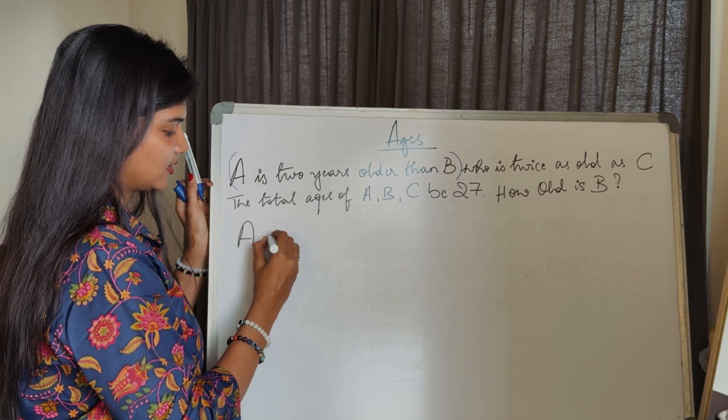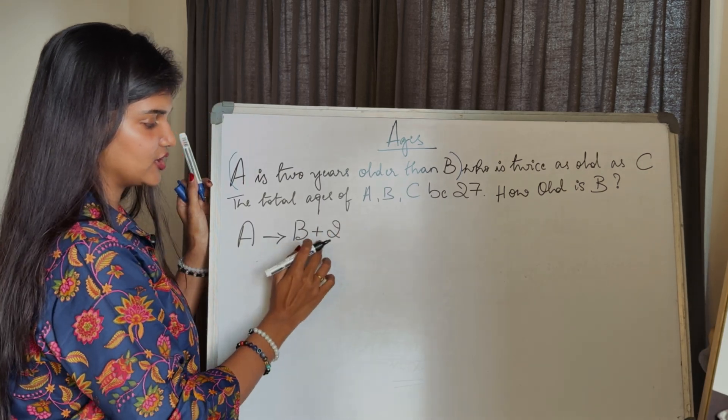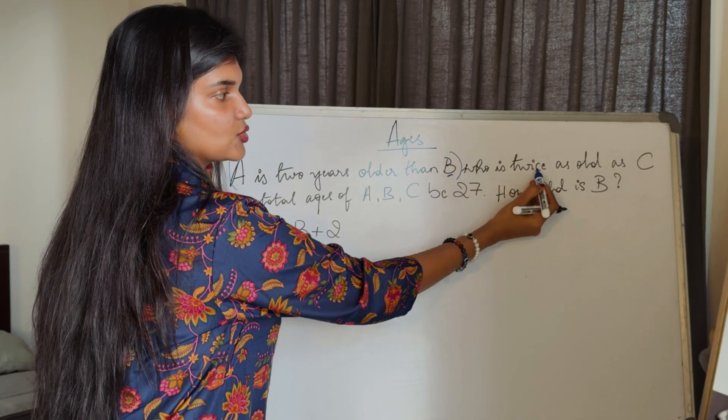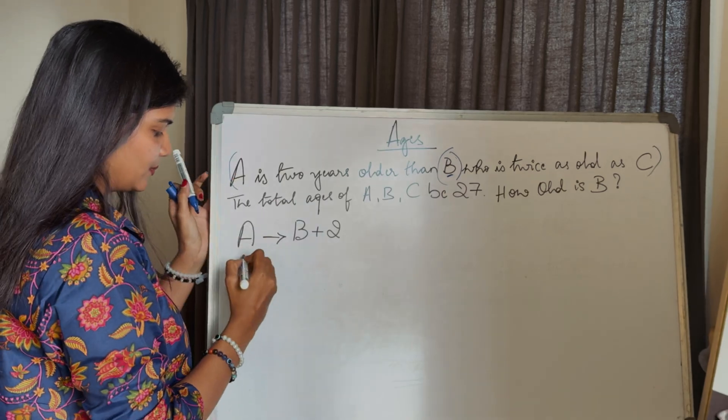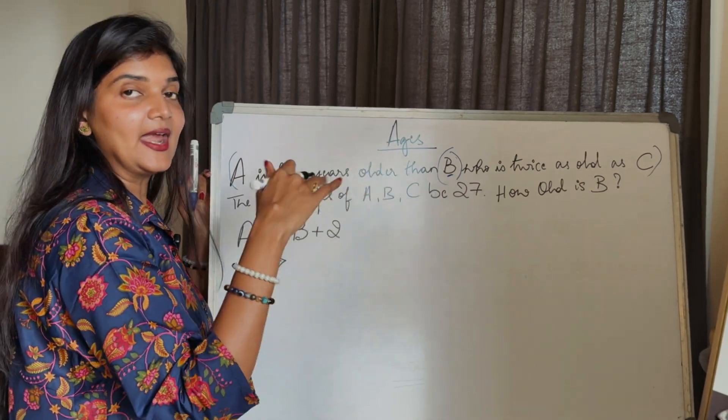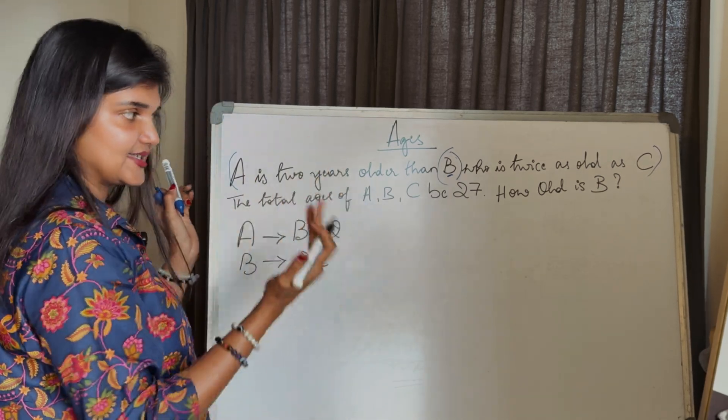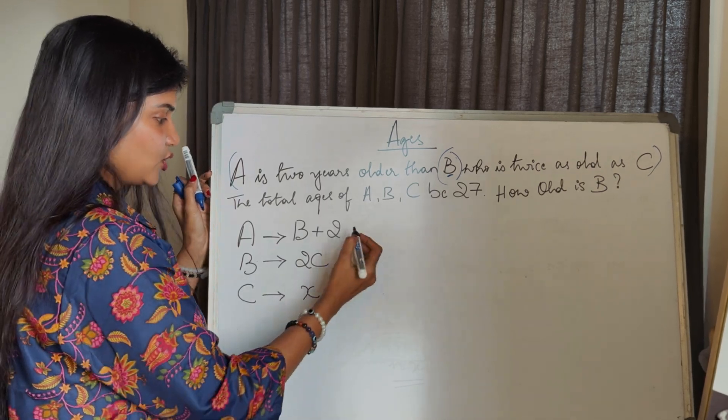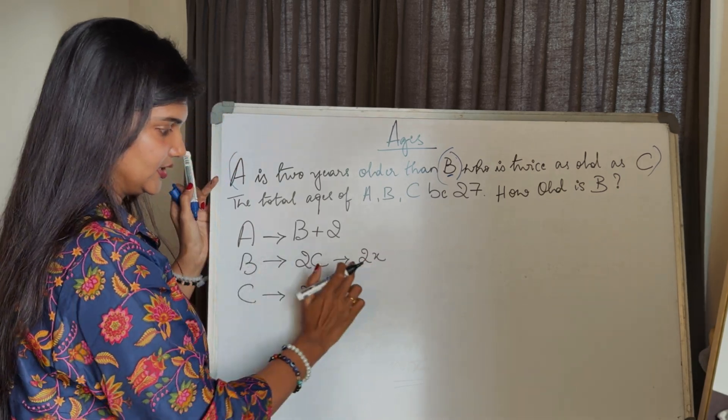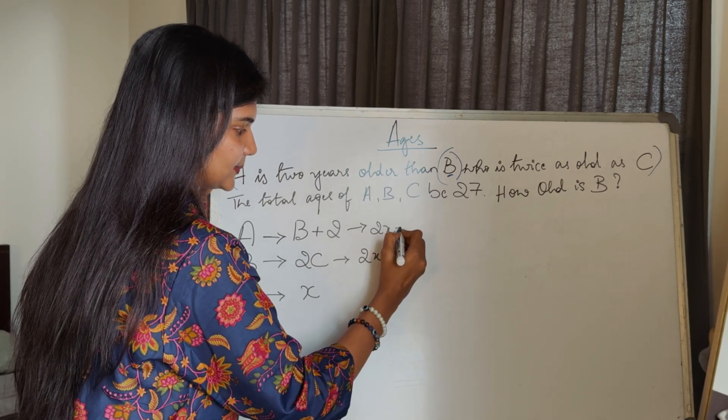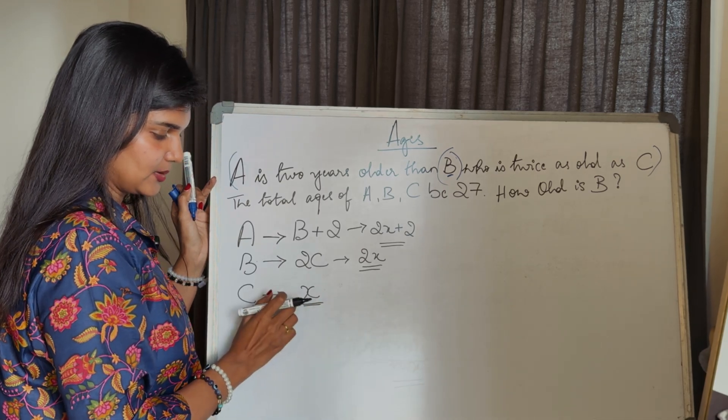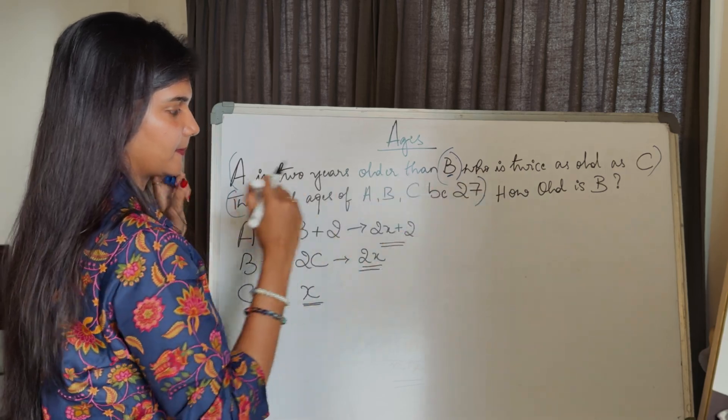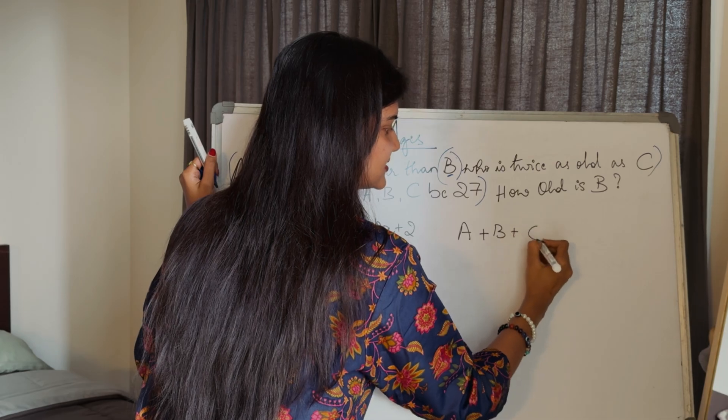First, A is two years older than B, so what is the age of A? A is B plus 2. Next, who is - that means B - B is twice as old as C. B's age is twice, that is n times, two of C. They didn't give us C's value, so let's assume C is X. So B is 2X. And A is 2X plus 2.